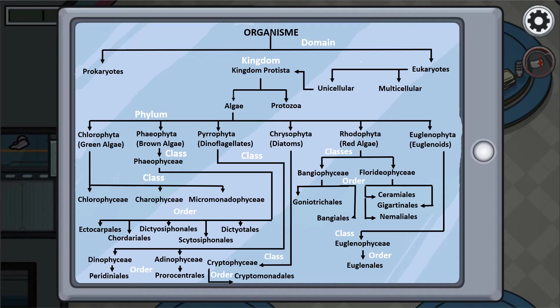The last phylum is euglenophyta, also known as euglenoids. It has one class, which is euglenophyciae, and under that class is the order euglenales.